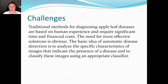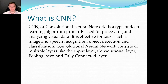What is CNN? CNN, or Convolutional Neural Network, is a type of deep learning algorithm primarily used for processing and analyzing visual data. It is effective for tasks such as image and speech recognition, object detection, and classification. A Convolutional Neural Network consists of multiple layers, like the input layer, convolutional layer, pooling layer, and fully connected layer.